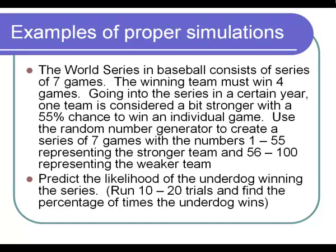Now, if the stronger team wins four or more games, then they win the World Series for that trial. If the weaker team wins four or more games, then they win the World Series for that trial. So if you have four or more numbers that are from 1 to 55, the stronger team is winning.